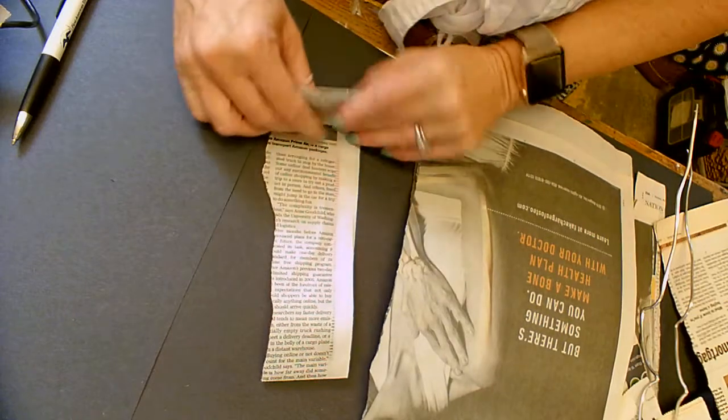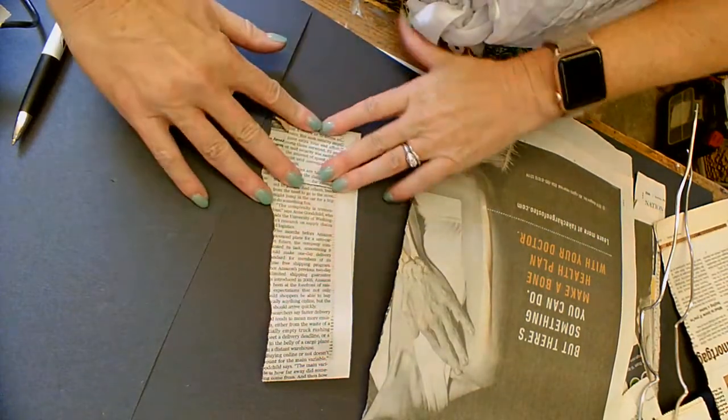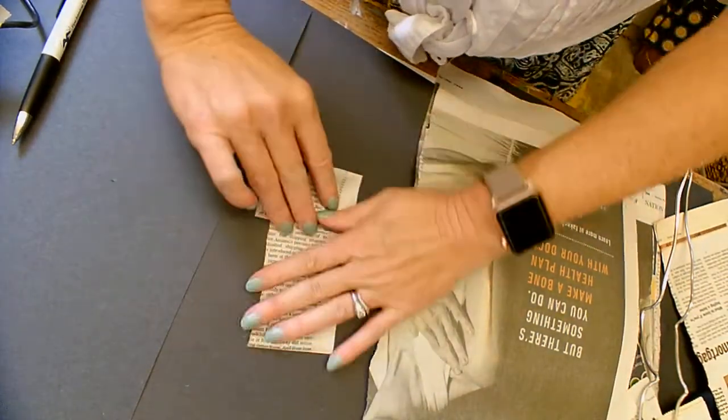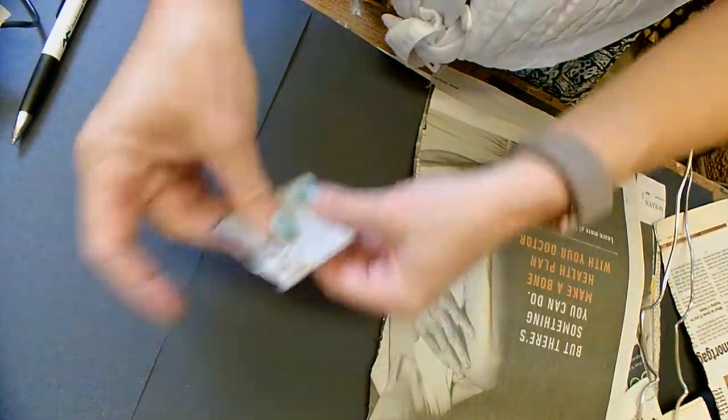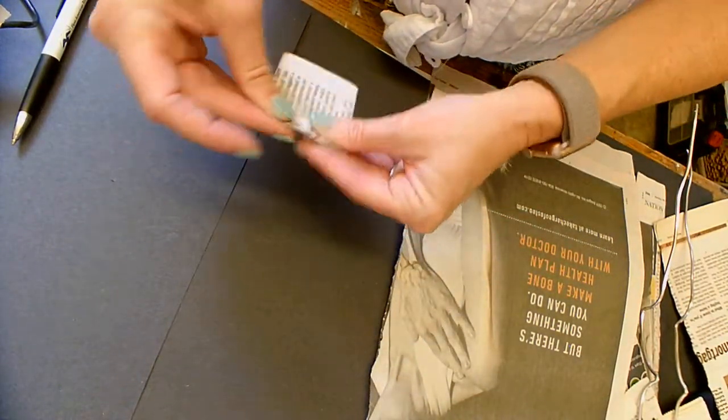You're just going to kind of fold it up that length all the way up like this. So you have like a little square. You can just fold that over.